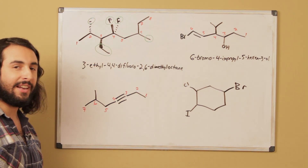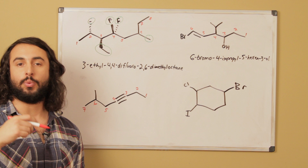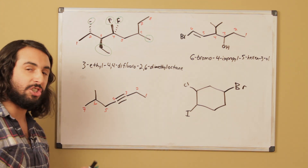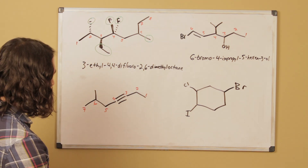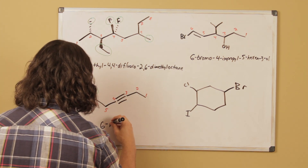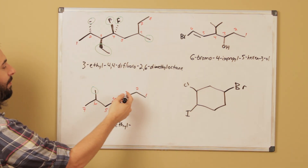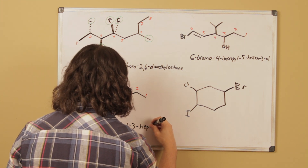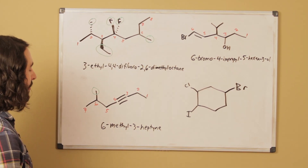These sp hybridized carbons are drawn linearly to be geometrically accurate. We have a seven-carbon alkyne as well as a methyl group. We list the methyl: 6-methyl. Then we list the presence of the triple bond and where it occurs — it begins at carbon three. So the name is 6-methyl-3-heptyne: 'hept' for seven carbons and 'yne' for the triple bond.